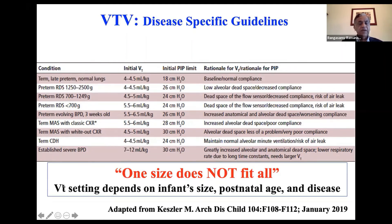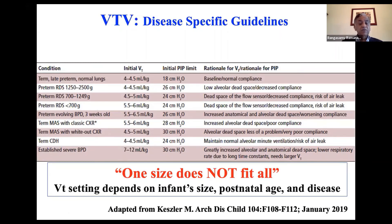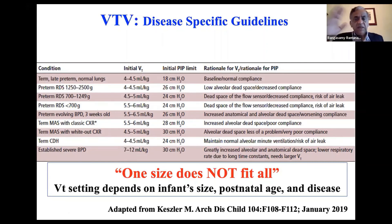Tidal volume setting depends on the size of the baby, the postnatal age, and the underlying condition. If treating RDS, use 4 to 5 mL per kilo. If treating diaphragmatic hernia, use 4 mL per kilo. If treating BPD, anywhere from 7 to 12 mL per kilo. Unfortunately, you cannot use just one target tidal volume for these three totally different pathophysiologies.